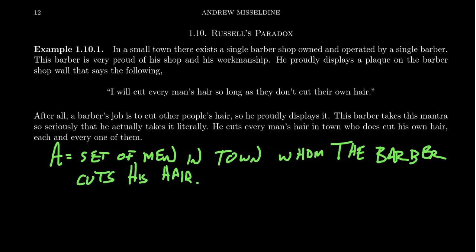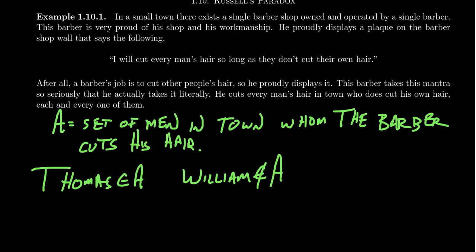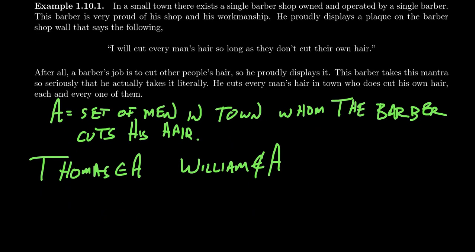This barber cuts every man's hair in town who doesn't cut his own hair. For example, there's a fellow in our town named Thomas. Thomas gets his hair cut by the barber every two weeks at the shop, so Thomas belongs to set A. On the other hand, we have another fellow named William. William cuts his own hair at home, so he does not belong to set A. On the surface, this seems like a fairly simple determination.